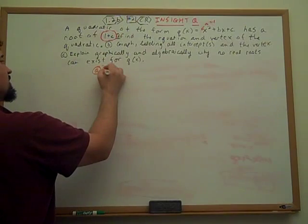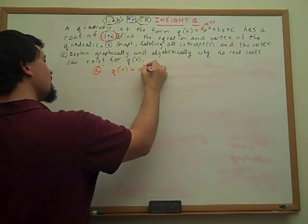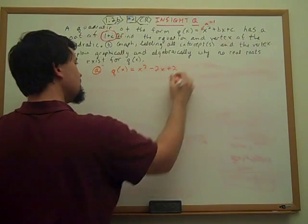So we know that the answer to part A is Q of x equals x squared minus 2x plus 2 with a vertex of 1,1.